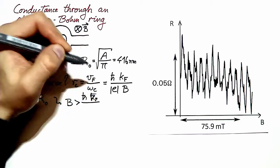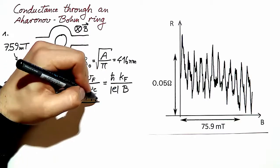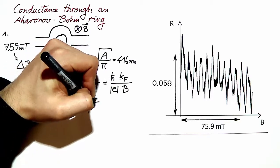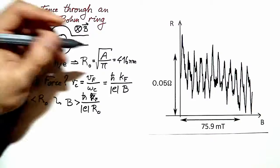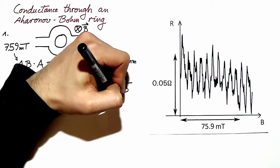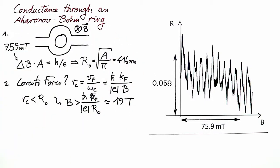This is k_F, Fermi wave vector, over e times the radius, and this is about 19 tesla, a very large value which does not occur in this experiment.